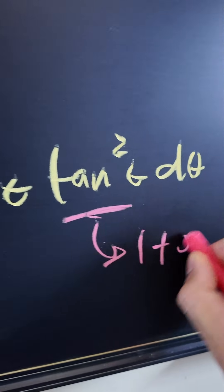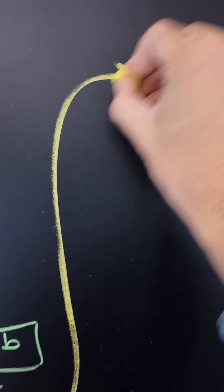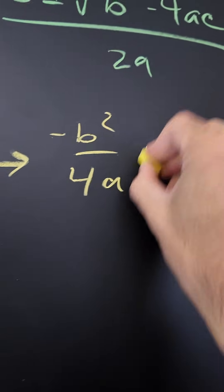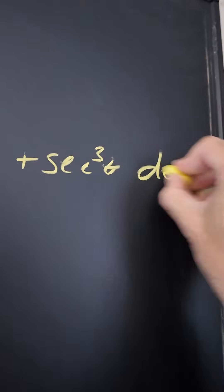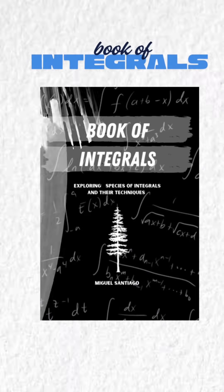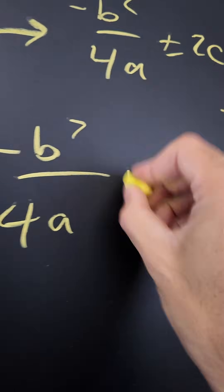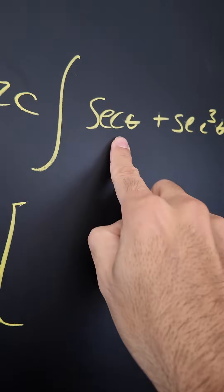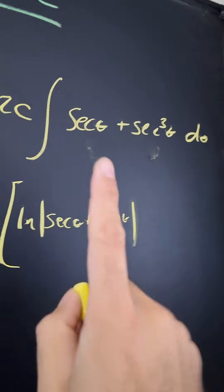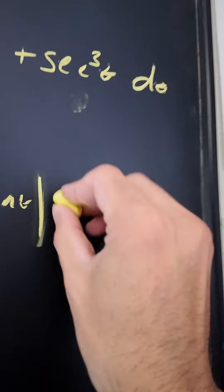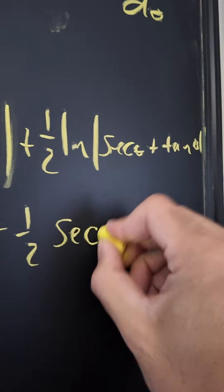We know tan squared theta equals sec squared theta minus 1, so we distribute the secant theta to get the integral of secant theta plus secant cubed theta dθ. These are special integrals: the integral of secant theta is the natural log of |secant theta + tan theta|, and the integral of secant cubed theta is one half natural log of |secant theta + tan theta| plus one half secant theta · tan theta. So our expression becomes 2C times the sum of those results.